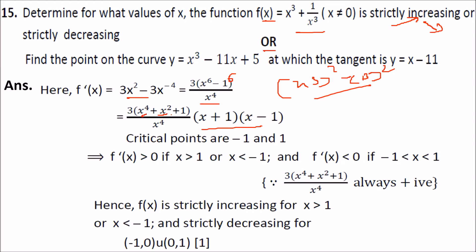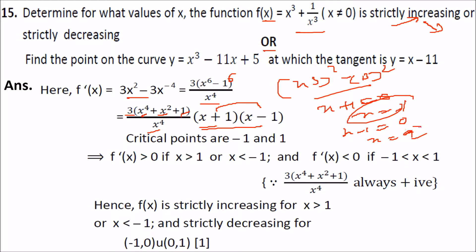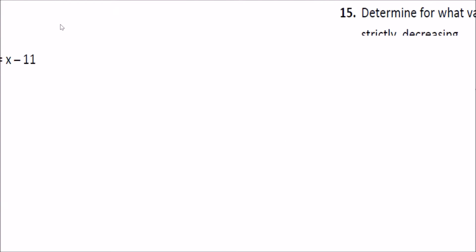The terms x⁴, x², and constants cannot be negative, so we focus on (x+1) and (x-1). The critical points are x equals minus 1 and x equals 1. If f'(x) is greater than 0, then x does not lie between minus 1 and 1, so f(x) is strictly increasing. If f'(x) is less than 0, x lies between minus 1 and 1, so f(x) is strictly decreasing.